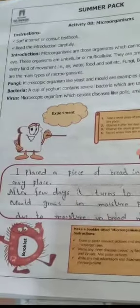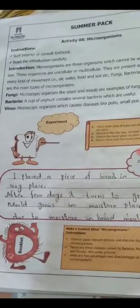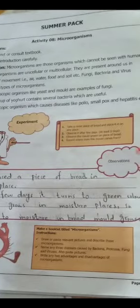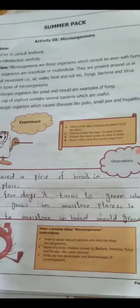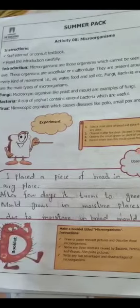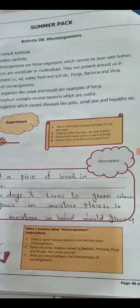You can write: I placed a piece of bread in an airy place. After a few days it turns to green color. Mold grows in moist places, so due to moisture in the bread, mold grows.